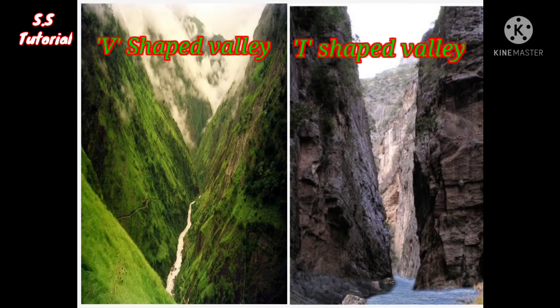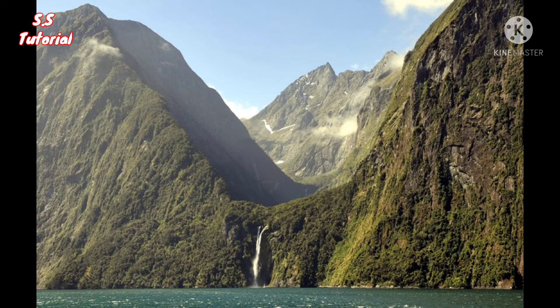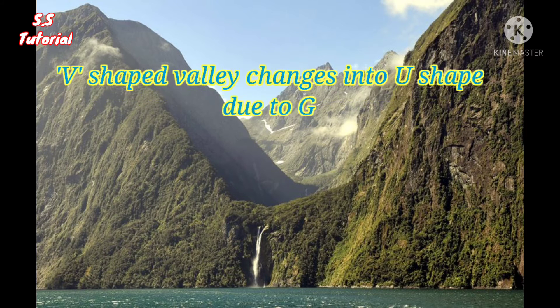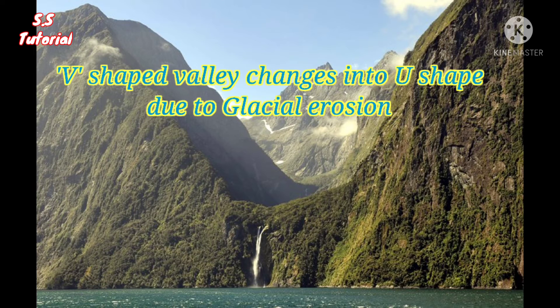The shape of a river valley can be V-shaped or I-shaped. But when a glacier moves through a V-shaped river valley, then the V-shaped river valley changes into a U-shaped valley.